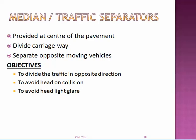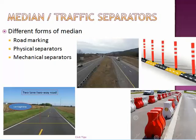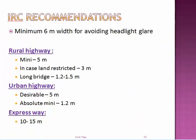The fourth element is the median, also called a traffic separator. It is provided at the center of the road, dividing the opposite-moving traffic. The main objective is to divide traffic in opposite directions, avoiding head-on collisions and headlight glare. Some plants are grown in the median area to avoid headlight glare. A median can be as simple as road markings using white or yellow paint, a physical separator like a raised divider, or a mechanical separator like a cone or bar.